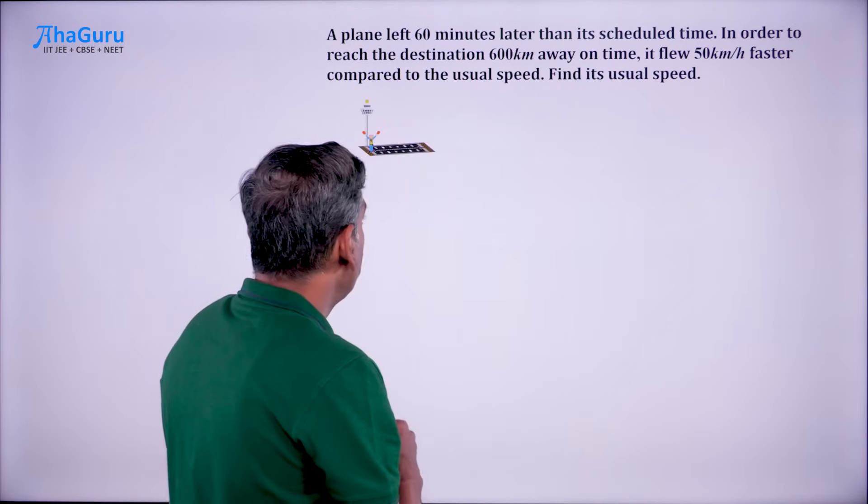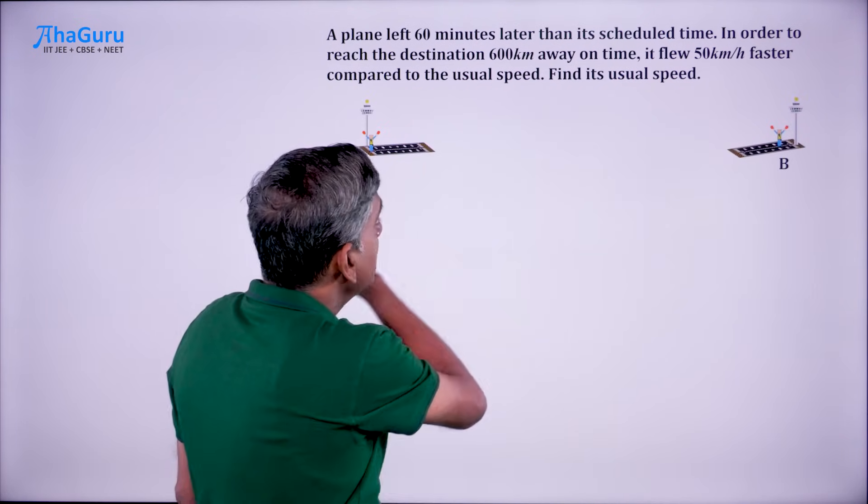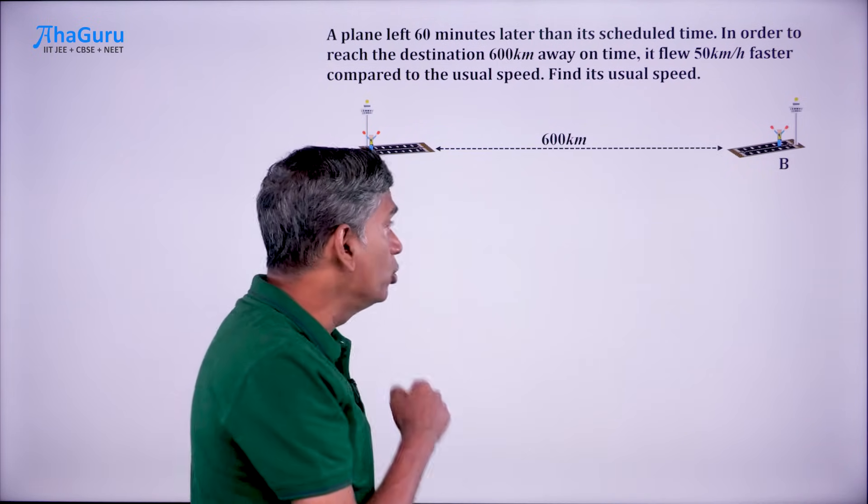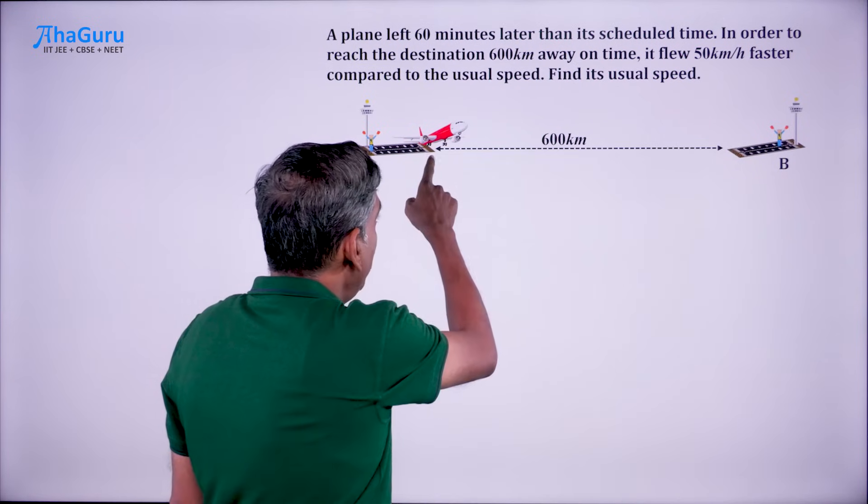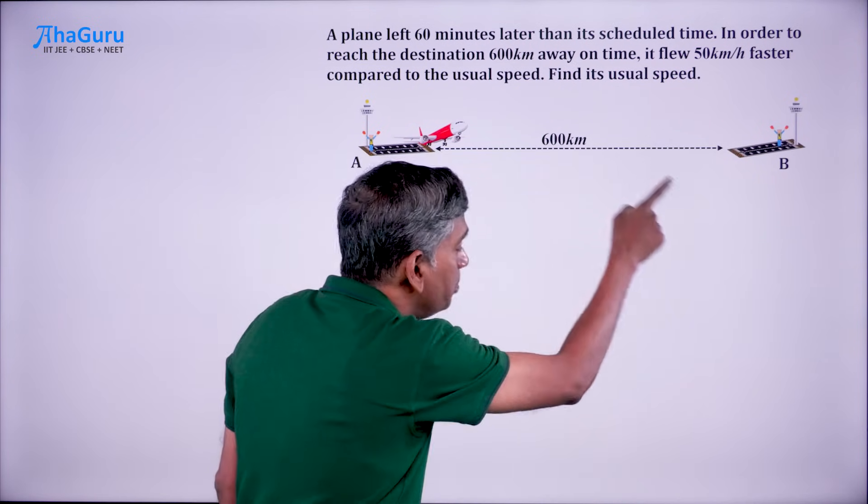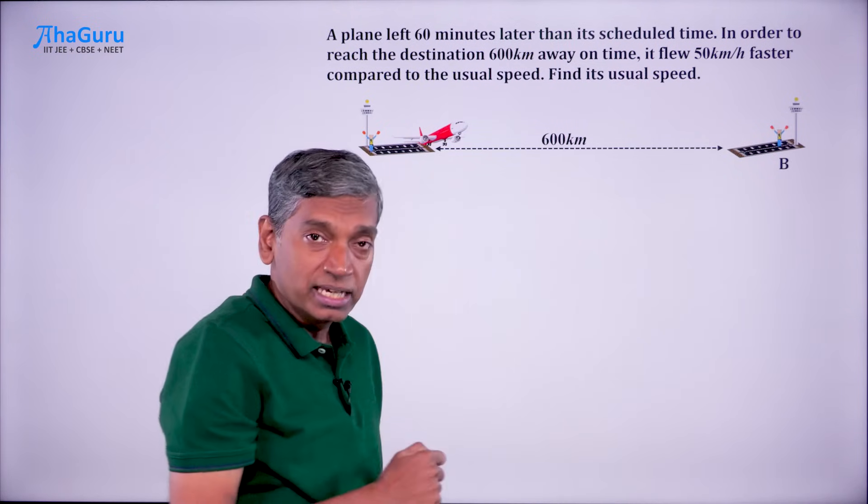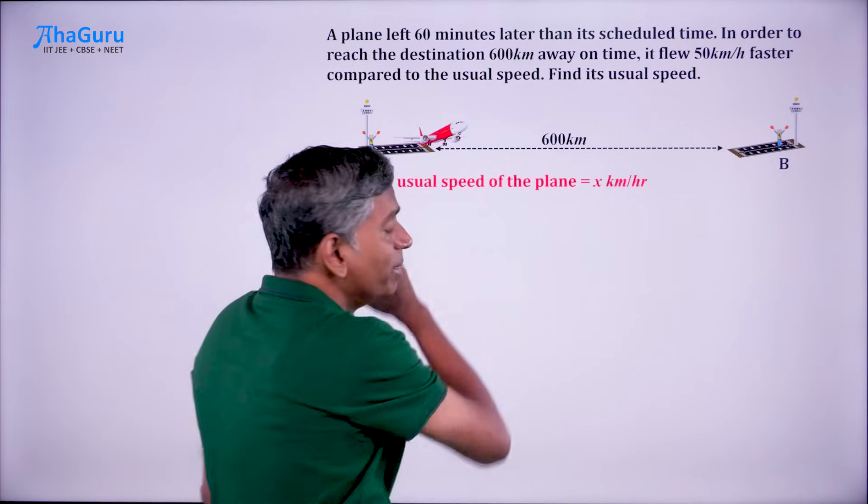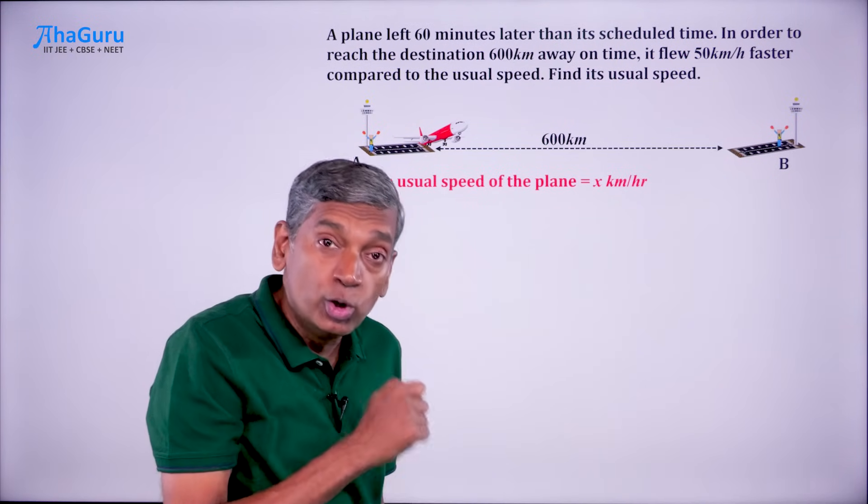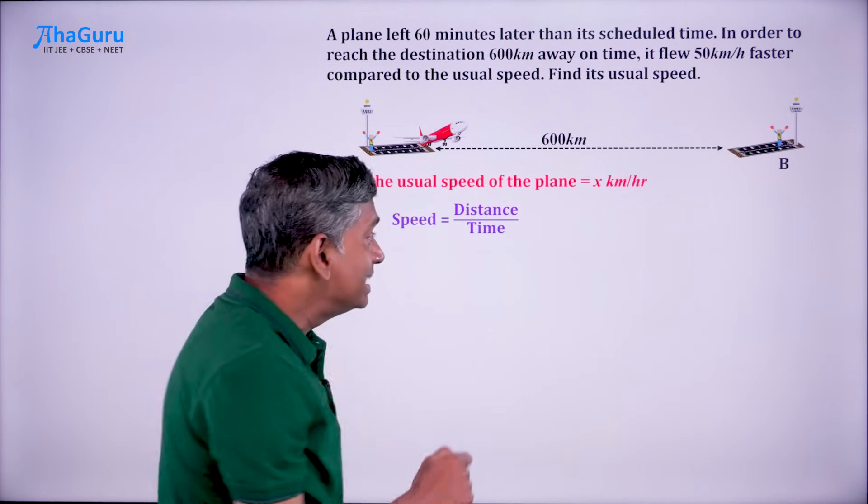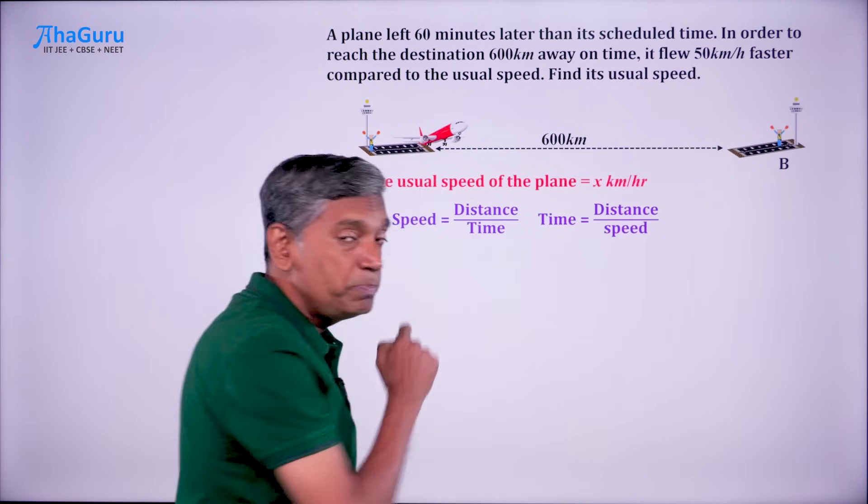What we are given is there are two points A and B which are 600 kilometers apart. There is a plane that is going to fly from A to B. Suppose the usual speed is x kilometers per hour. We know that speed equals distance by time.